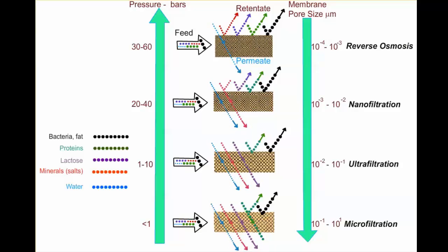The pressure used in these systems also varies. Microfiltration uses fairly low pressures around 1 bar. Ultrafiltration requires 1 to 10 bars, nanofiltration 20 to 40 bars, and reverse osmosis requires very high pressures around 30 to 60 bars.